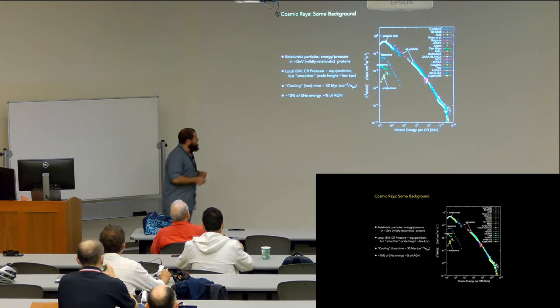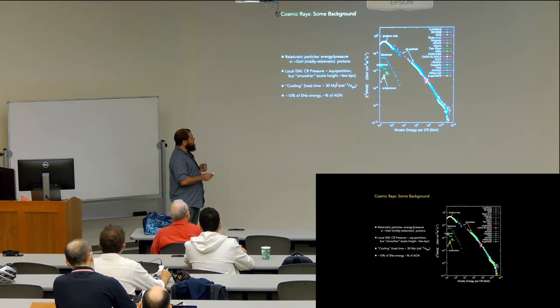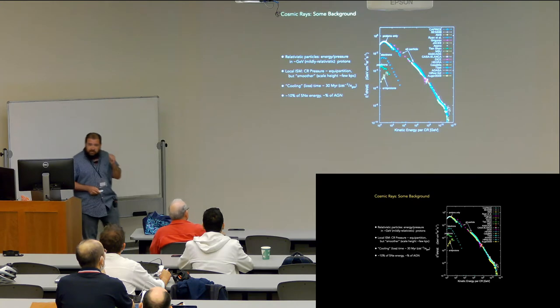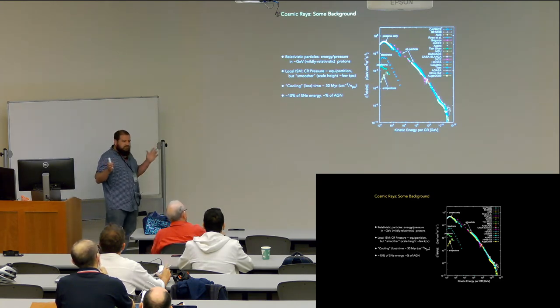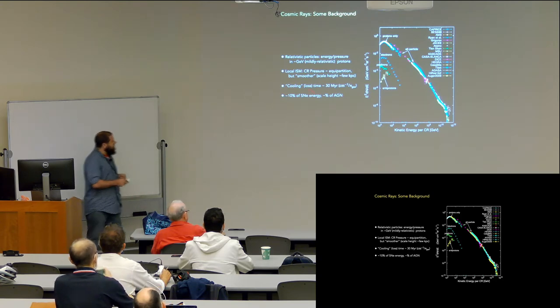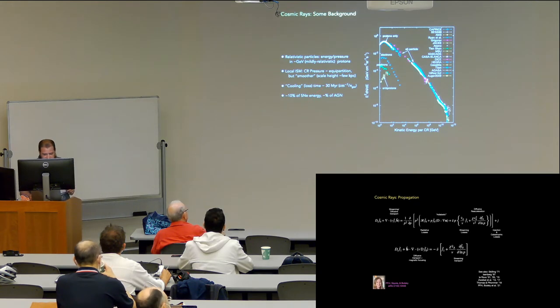They can... They do have losses. Sometimes people will say cosmic rays don't cool. That's wrong. But their cooling time in low-density gas can be very long. Their energy loss time in dense gas can be quite short compared to the dynamical time. But they are interesting for that reason. And it's something like 10% of the energy in supernovae and, much more uncertain, maybe of order a percent, the energy in AGN goes into accelerating these particles.